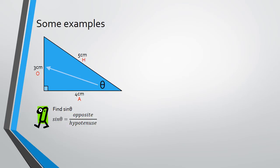So from before, sin theta equals opposite over hypotenuse. So using the values that we have in the triangle, opposite is 3 and the hypotenuse is 5. So sin theta is 3 over 5.